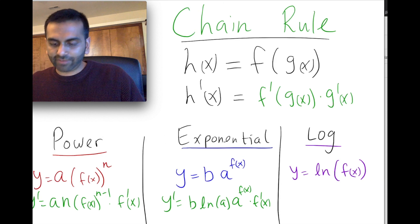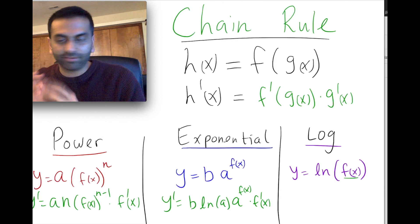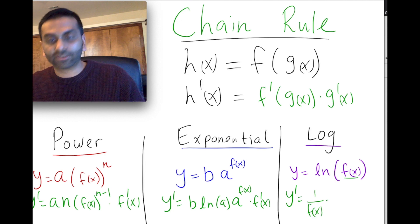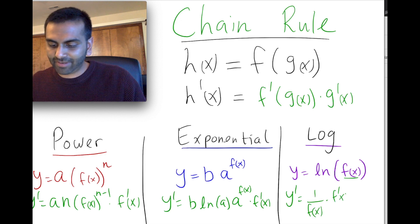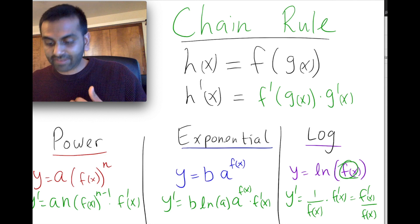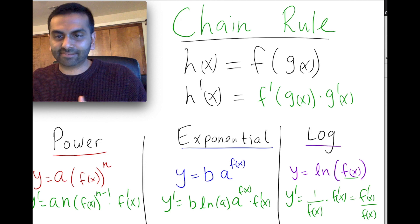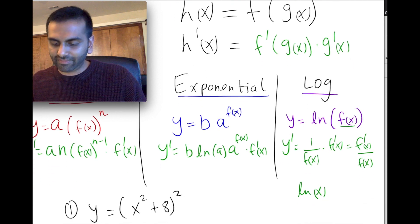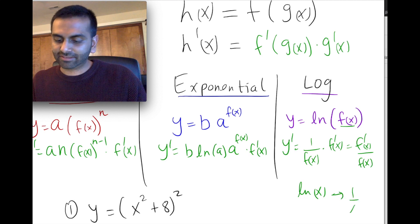For a log function — ln of not just x but some other function f(x) — the derivative is 1 over f(x) multiplied by f'(x). You can simplify that as f'(x) over f(x). So the derivative of ln of something is just the derivative of the inside divided by the inside. With ln(x), f'(x) is 1, so you get 1/x as expected.